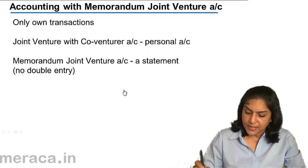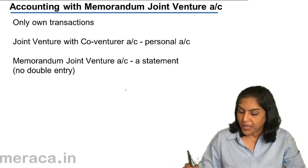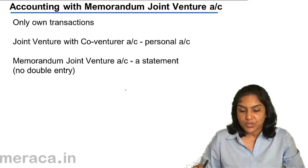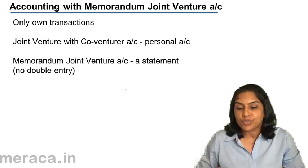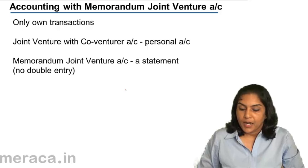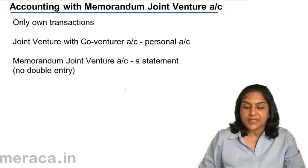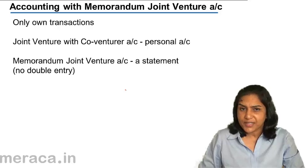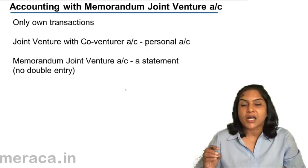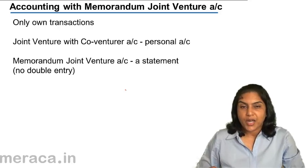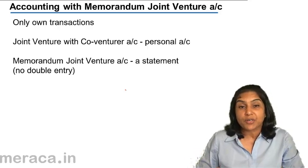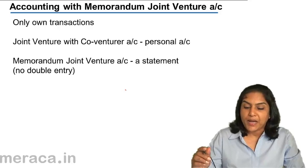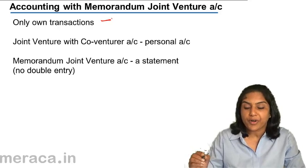Let's go to the second method of accounting where a separate set of books is not kept and each co-venturer passes entries in his own set of books. This is accounting with memorandum joint venture. Here, only own transactions are recorded. If Akash spends money, Akash records the same in Akash's books. Akash does not pass any entry for expenditure on the joint venture by Bikash — he passes entries only for his own transactions.